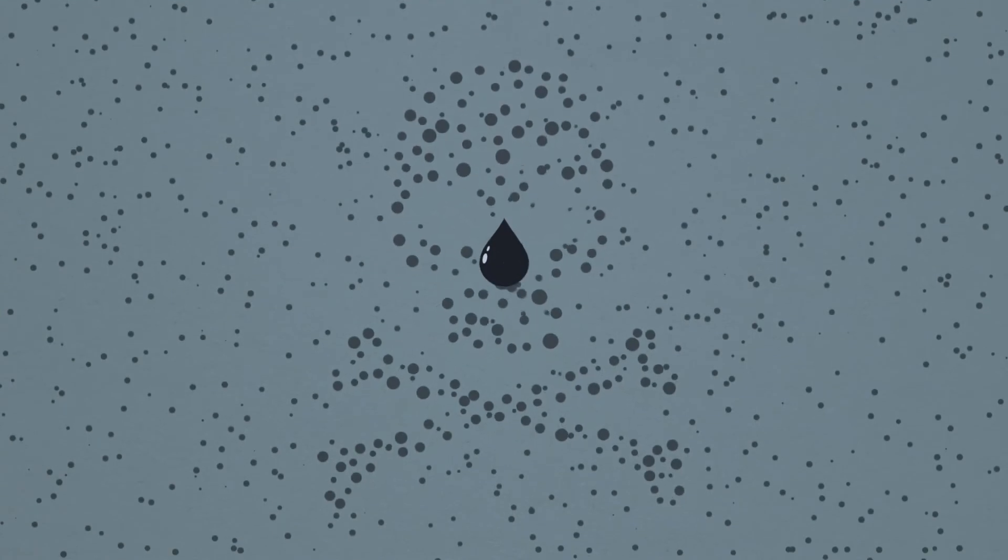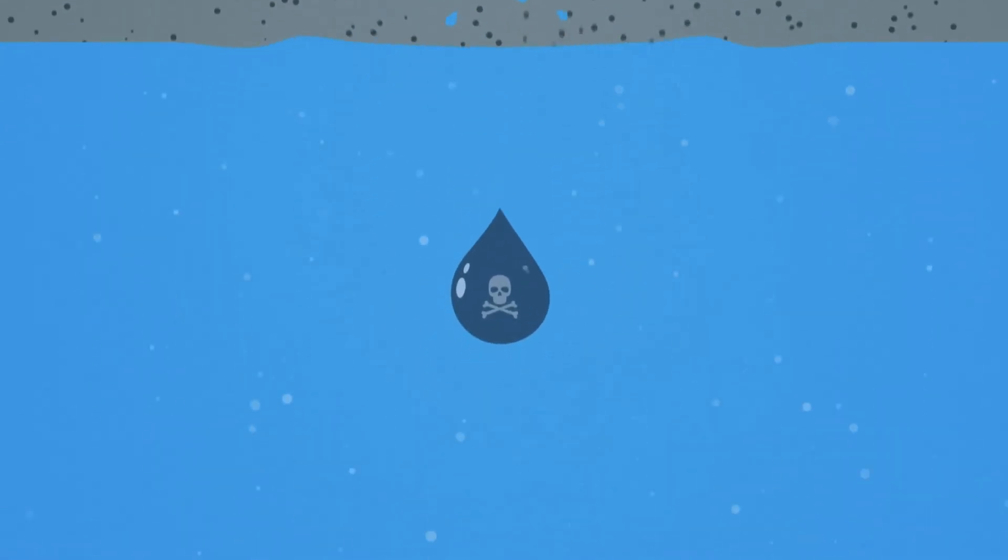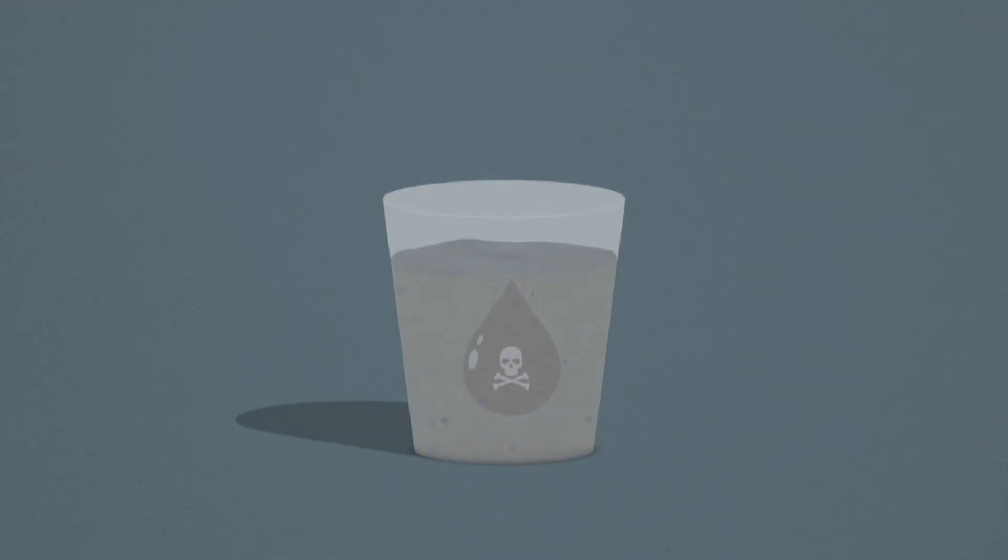The toxic fracking fluid that stays underground becomes even more toxic over time as it picks up radioactivity and other contaminants. Those fluids and gases can then seep into aquifers, which provide irrigation for farming, and turns drinking water into a toxic mix.